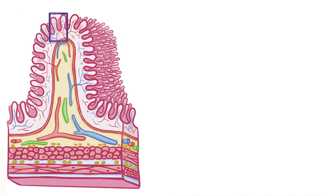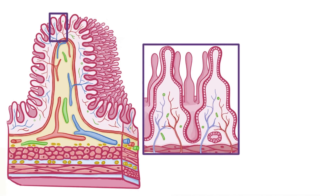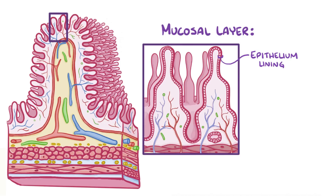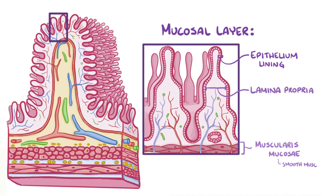The small intestine is made of several layers. The innermost layer is the mucosal layer, and it's composed of a few of its own layers. The first layer is the epithelial lining, and it faces the lumen. Next is the lamina propria, which is rich with blood and lymph vessels. And finally there's the muscularis mucosae, which has smooth muscle.